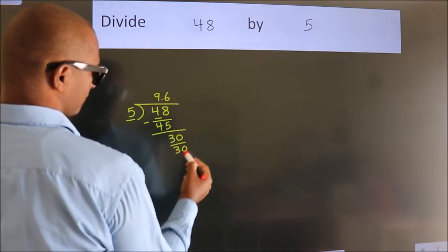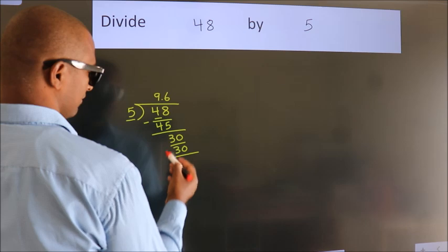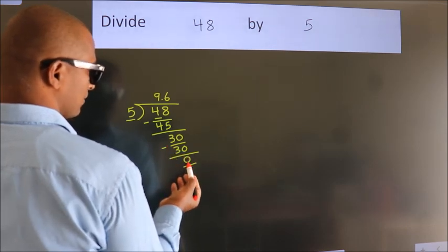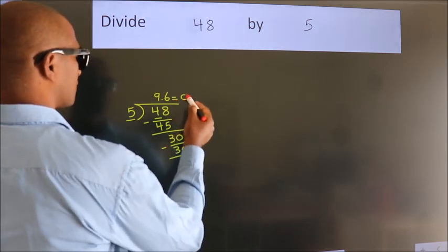When we subtract, we get 0. We got remainder 0. So this is our quotient, 9.6.